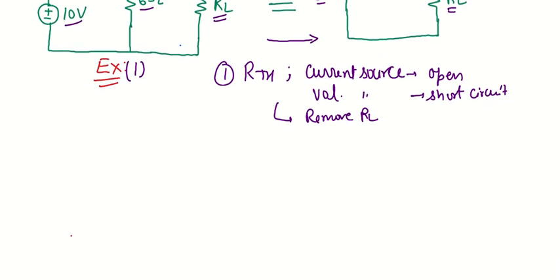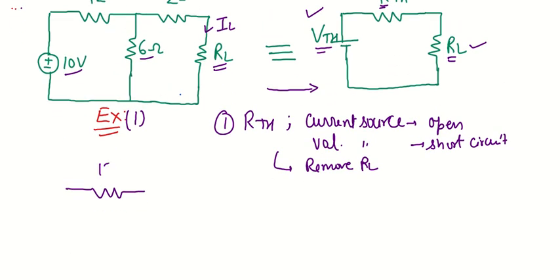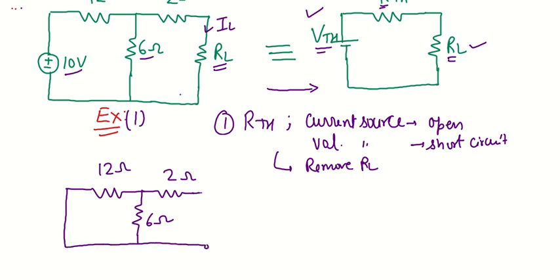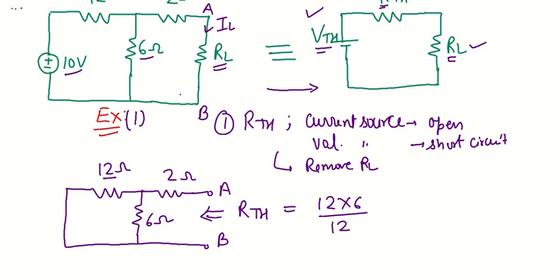The circuit has resistances of 12 ohm, 2 ohm, and 6 ohm. We short the voltage supply and remove the load resistance. Terminal A and B is where the load was removed. The 12 ohm and 6 ohm resistances are in parallel, and that combination is in series with the 2 ohm resistance, giving RTH = (12×6)/(12+6) + 2 = 4 + 2 = 6 ohm.